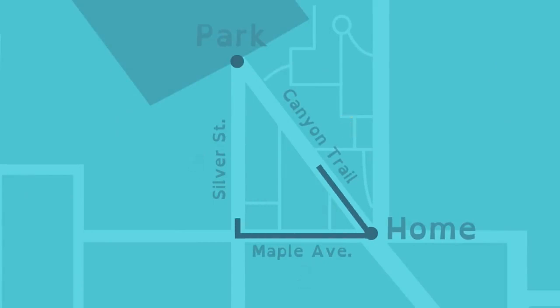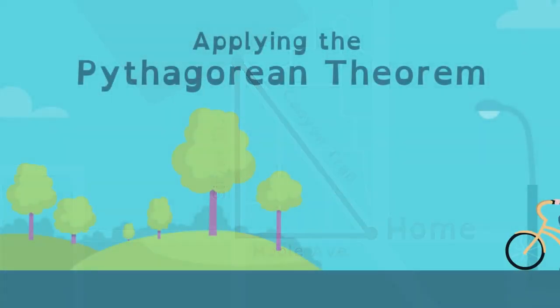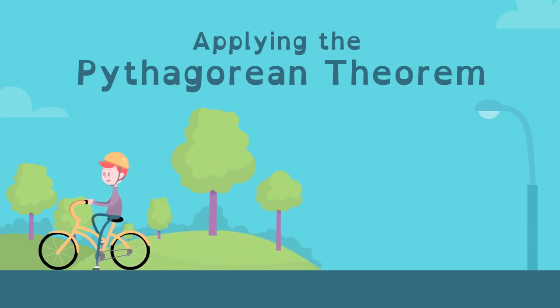If you can represent a problem using a right triangle, the Pythagorean Theorem can help you find distances.